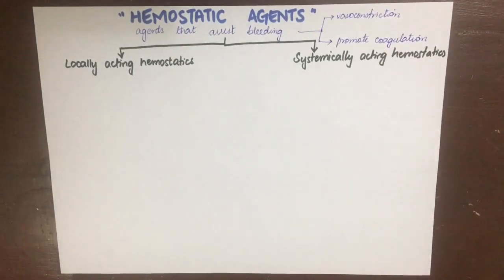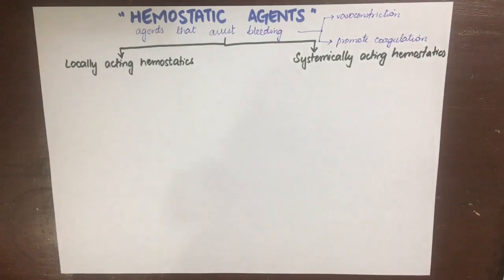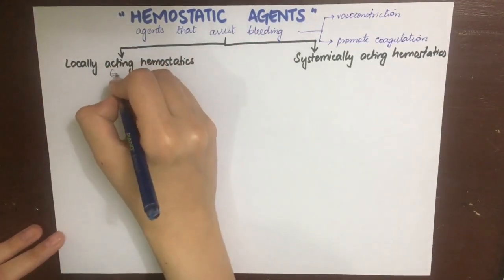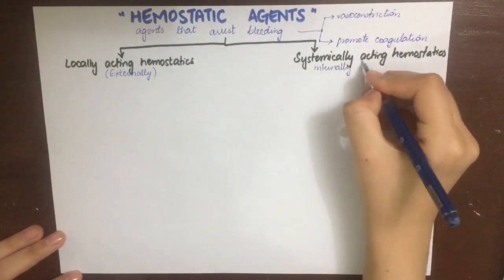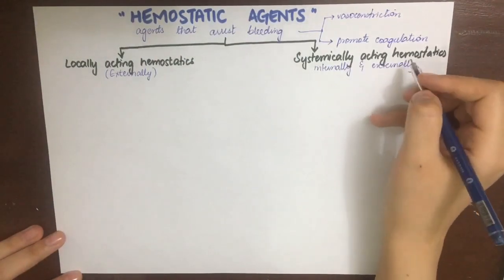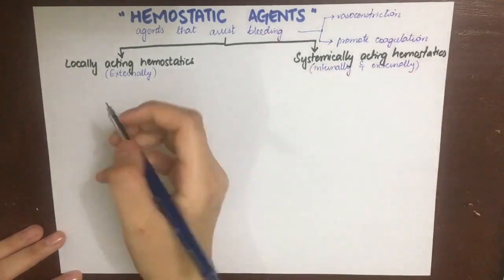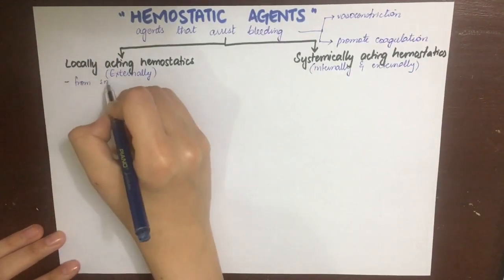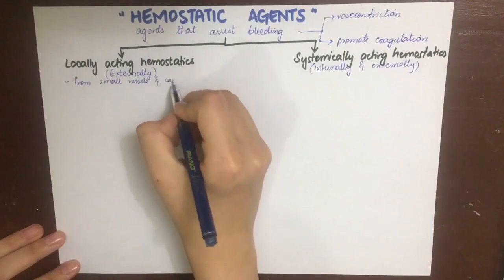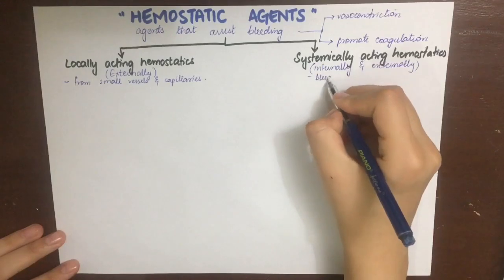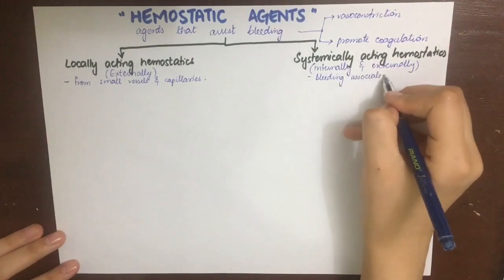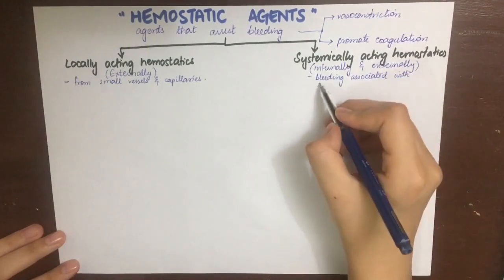The locally acting hemostatics are used to control bleeding from small vessels and capillaries, for example in tooth extraction, abrasions, epistaxis, or bleeding during surgical procedures. While systemically acting hemostatics can be used to control bleeding associated with blood disorders such as hemophilia or von Willebrand disease, and deficiencies like vitamin K deficiency, hypoprothrombinemia, or poisoning such as salicylate poisoning.